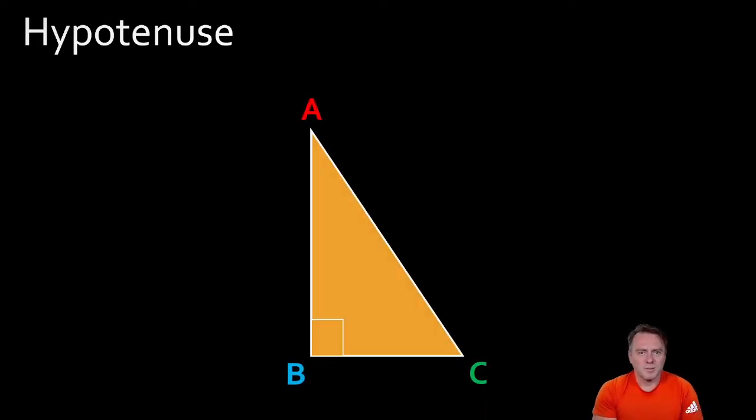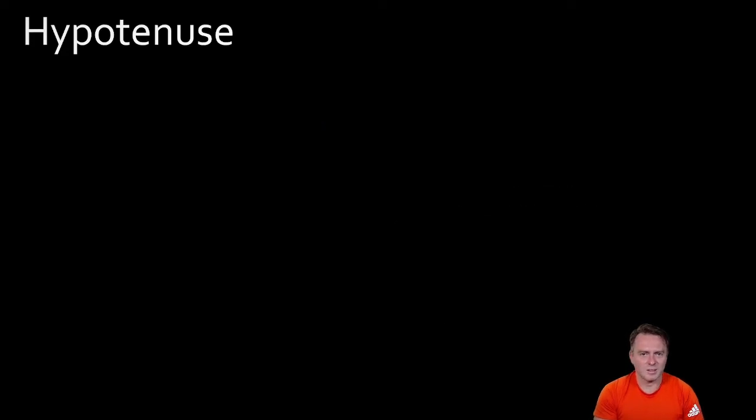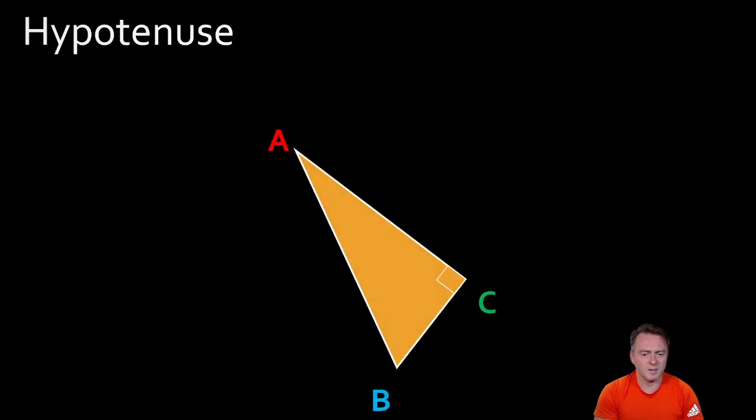So hypotenuse if we look at that and try and identify it should have found that it was this guy here. So that's the AC. In this one we should see that's AB.